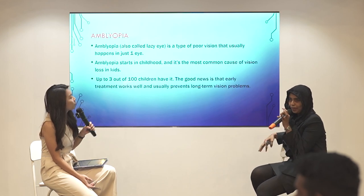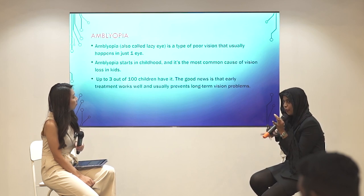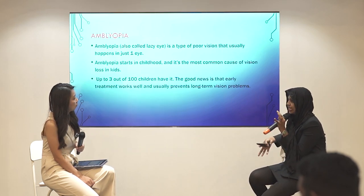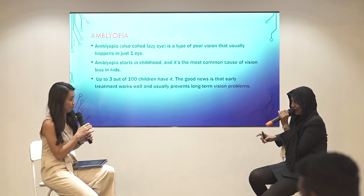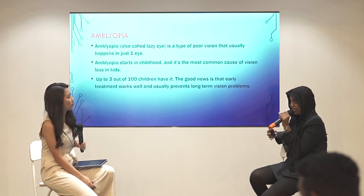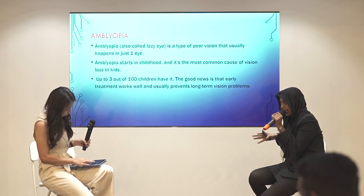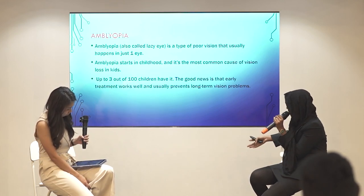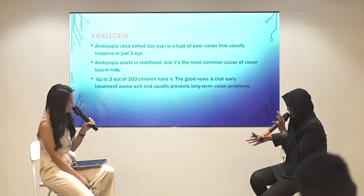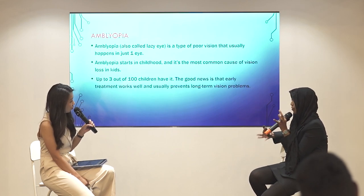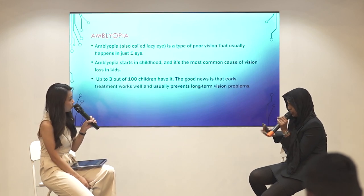The first condition is amblyopia, which is lazy eye. Amblyopia occurs when the problem is in only one eye, where the refractive error will be even higher, and slowly the brain will reject information from that particular eye — which we call the weaker eye. Up to 3 out of 100 children have it. The good news is that with early treatment it works well, and the prognosis is even better the earlier treatment is started.